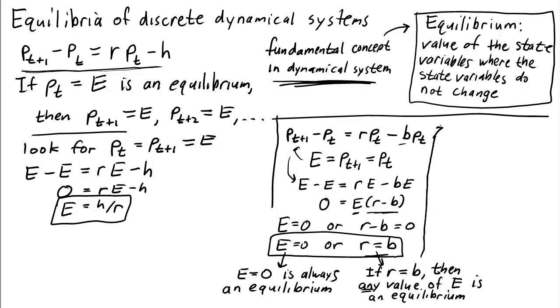Let's think about this a little further. So let's imagine we have r equals b. Then the dynamical system just becomes P_{t+1} - P_t equals 0. This is a dynamical system that says the value of P_t in the next time step is the same as the previous time step. There's no change. This implies the system never changes. In other words, this case here is pretty boring.